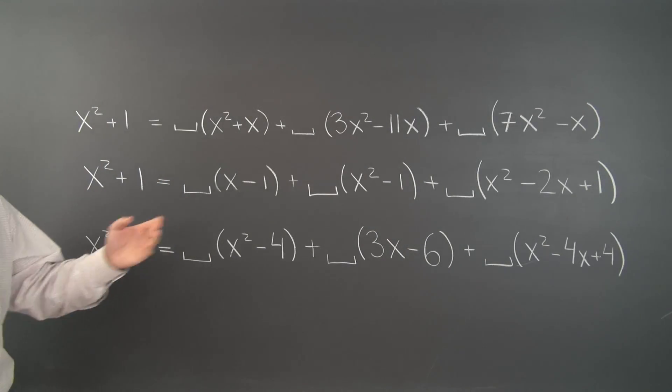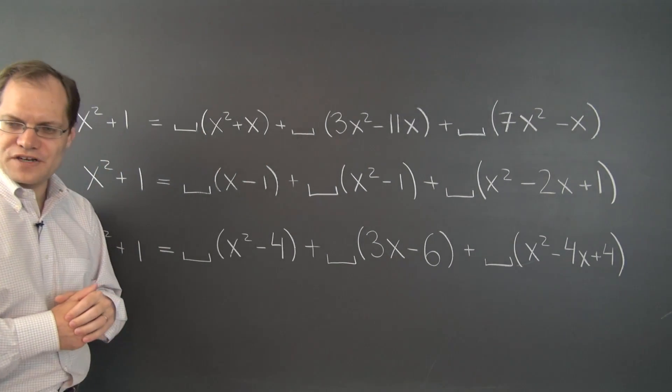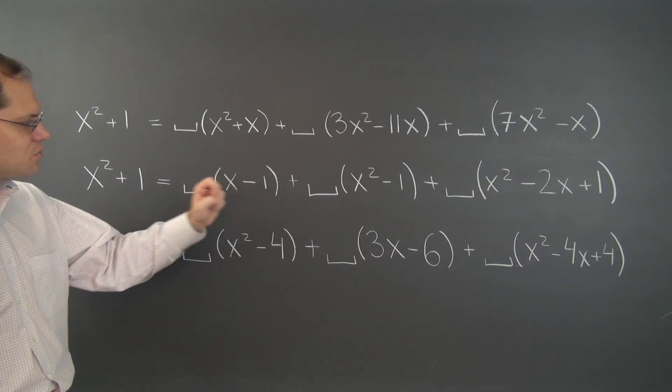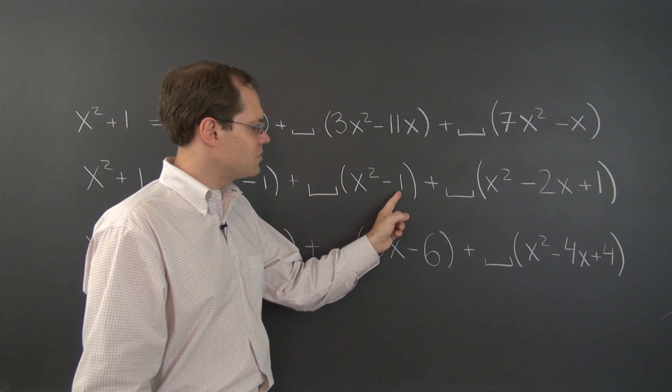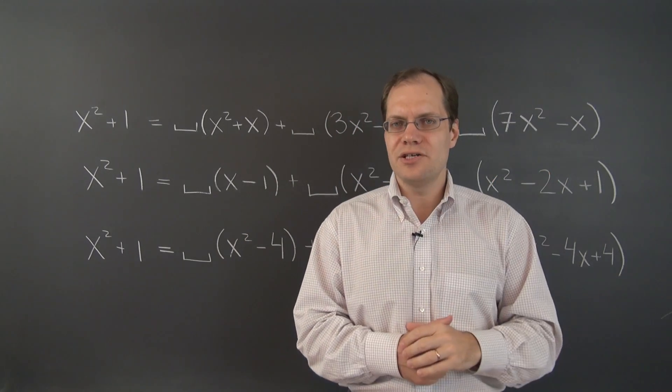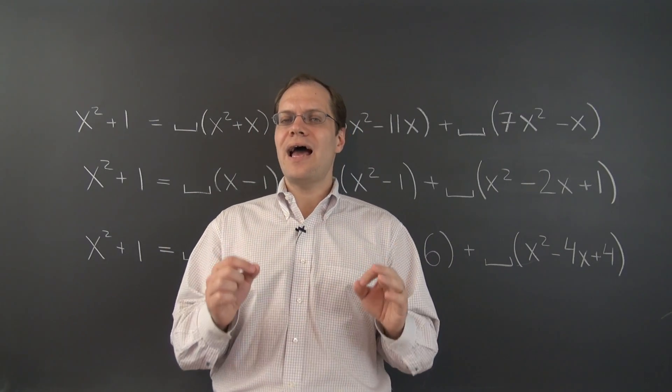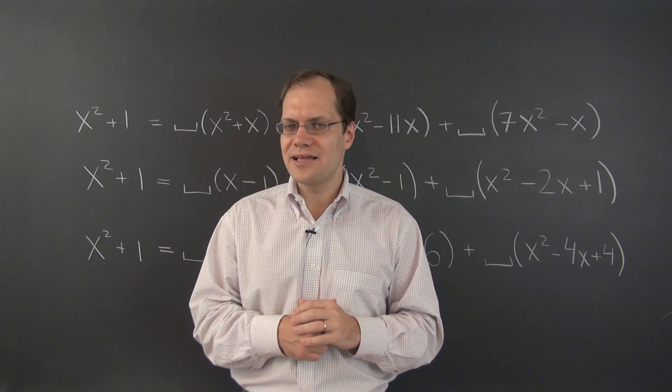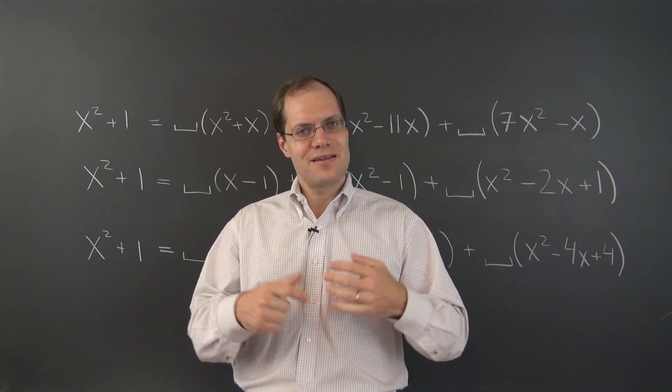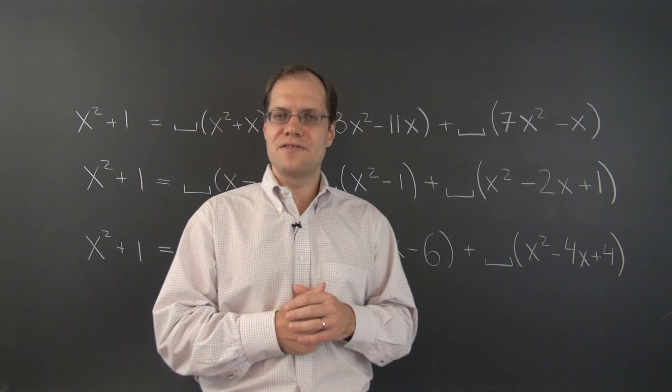Well, here it is. What the decomposition polynomials have in common is that their coefficients add up to 0. Here we have 1 minus 1, 0. 1 minus 1, 0. And 1 minus 2 plus 1 equals 0. And you have to think about it for a moment. But if you add together two polynomials like that, you will get another polynomial whose coefficients add up to 0. You can either convince yourself of that logically or try a couple of different examples.